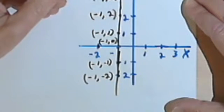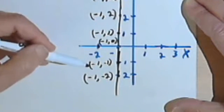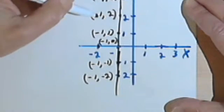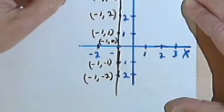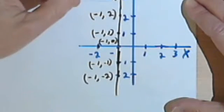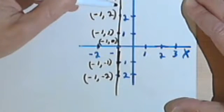So what I've got here is every one of these ordered pairs begins with negative 1. And, again, that makes sense because the first part of the ordered pair is the x-value. And the x-value everywhere on this vertical line is negative 1.